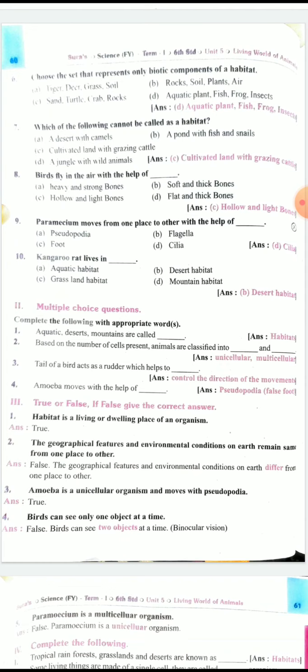Eighth one: Birds fly in the air with the help of C, hollow and light bones. Ninth one: Paramecium moves from one place to other with the help of cilia. Tenth one: Kangaroo, rat, leucine desert habitat. Are you understood? Yes.